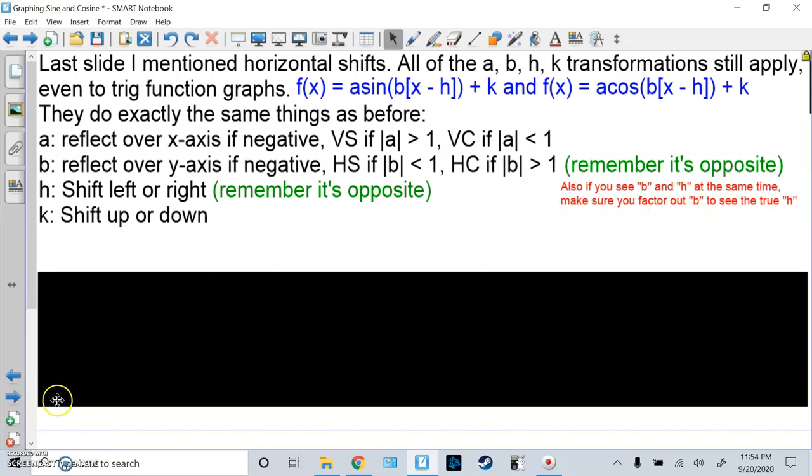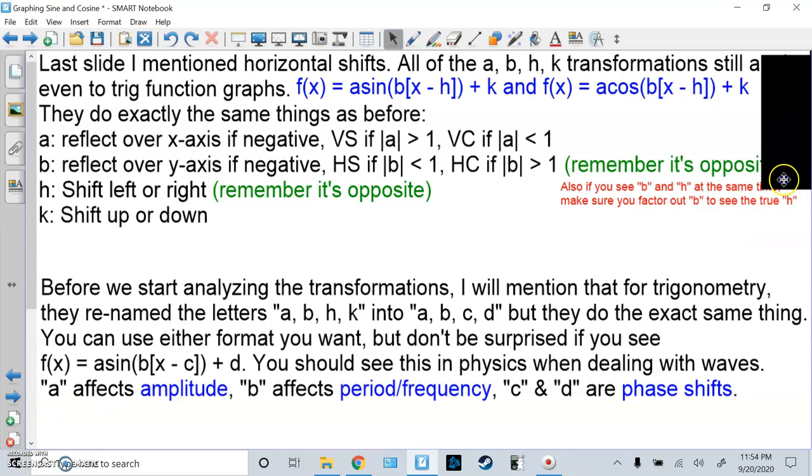Also, remember the trig part, if you see b and h at the same time, you must factor out the b to see the true h. A lot of people forgot that and they get things wrong. One other thing I need to say is this. Before we start analyzing the transformations, I'll mention that for trig, they actually renamed the letters a, b, h, k into a, b, c, d. But they do the exact same thing. You actually see the same format in physics when dealing with waves. a is amplitude, b is period of frequency, c and d are what we call phase shifts.